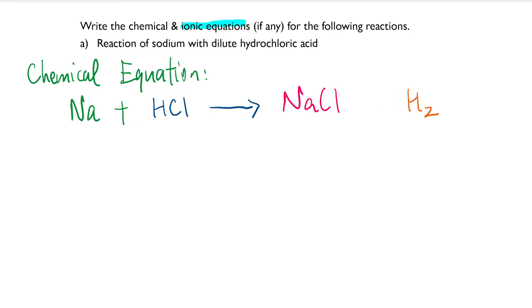A few videos earlier, we learned about balancing chemical equations, so I won't go into detail — you can refer to that video. On the right-hand side I have two hydrogen atoms, and on the left I just have one. So to balance the number of hydrogen atoms, I'll need to add the coefficient 2 in front of the molecule.